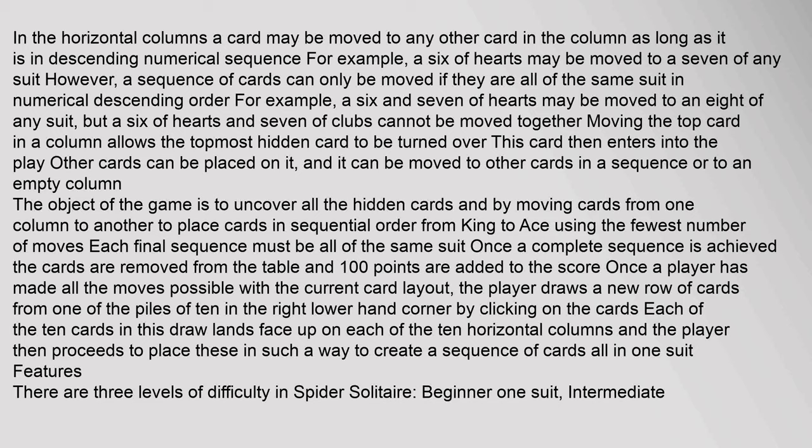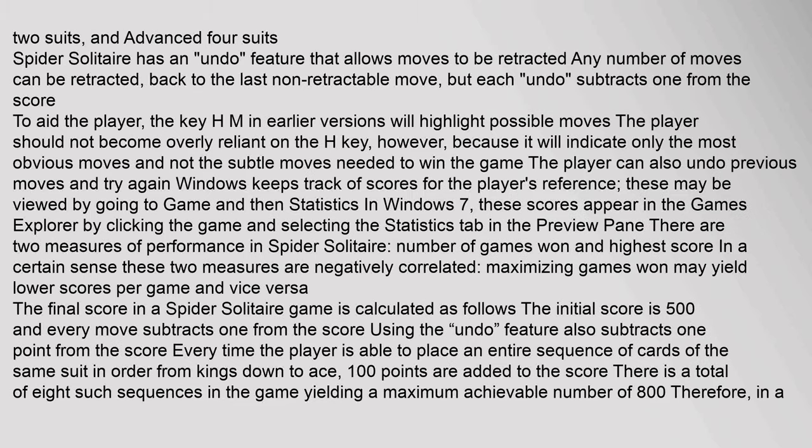The object of the game is to uncover all the hidden cards and, by moving cards from one column to another, to place cards in sequential order from King to Ace using the fewest number of moves. Each final sequence must be all of the same suit. Once a complete sequence is achieved, the cards are removed from the table and 100 points are added to the score. Once a player has made all the moves possible with the current card layout, the player draws a new row of cards from one of the piles of 10 in the lower right-hand corner by clicking on the cards.